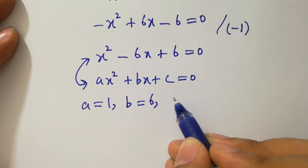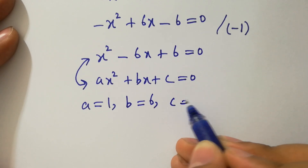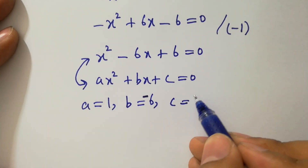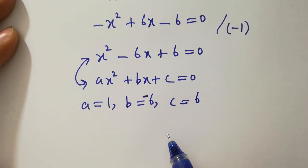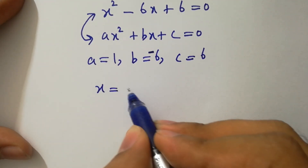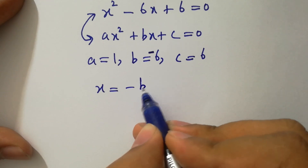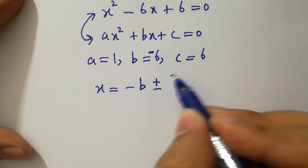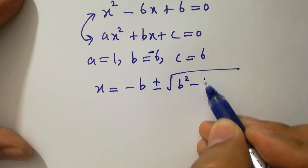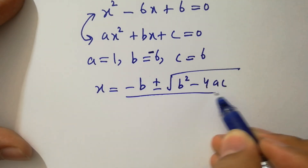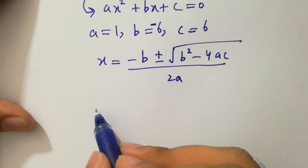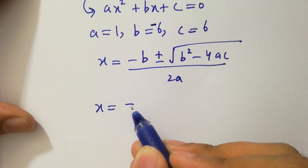By comparing, we have a equals 1, b equals minus 6, and c equals 6. Now apply the quadratic formula: x equals minus b plus or minus square root of (b squared minus 4ac), all over 2a.